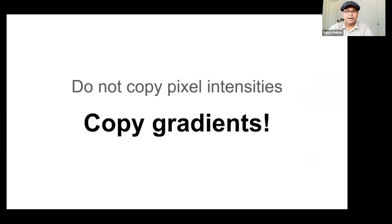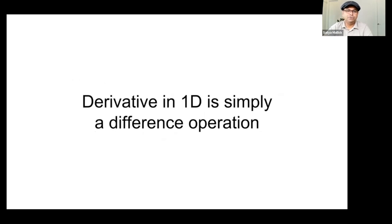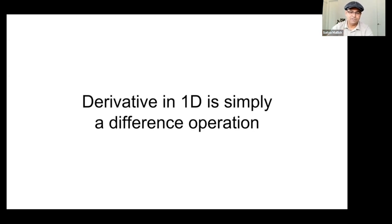The basic idea behind seamless cloning is that we have to copy the gradients from one image to the other instead of copying the pixel intensities. This will be very clear after you see the 1D case. Before we go to the example, let's understand what derivative means — what differentiation means. If you remember from high school calculus, integration is nothing but summing up values in the discrete domain, and differentiation is differencing or subtracting values.